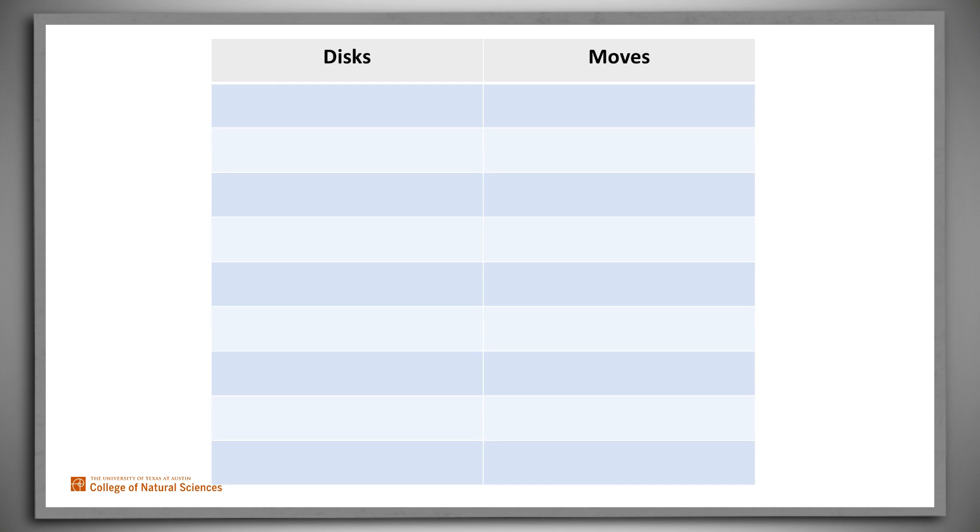Moving one disk takes exactly one move. To move two disks, we have to move the smaller one, then the bigger one, and then the smaller again, so a total of three. To move three disks, we must move two, which takes three, then the big one, and then two again, so seven.